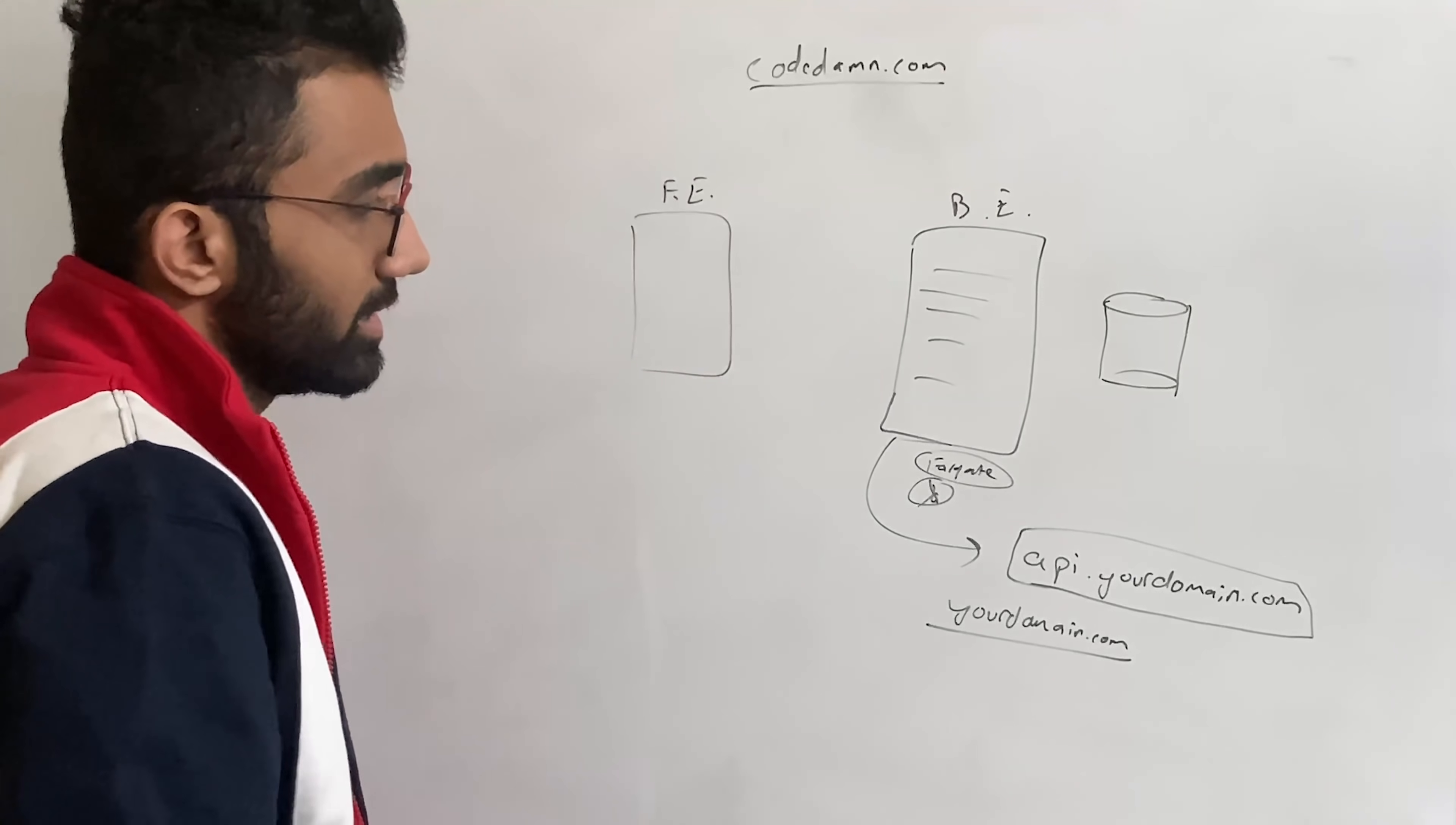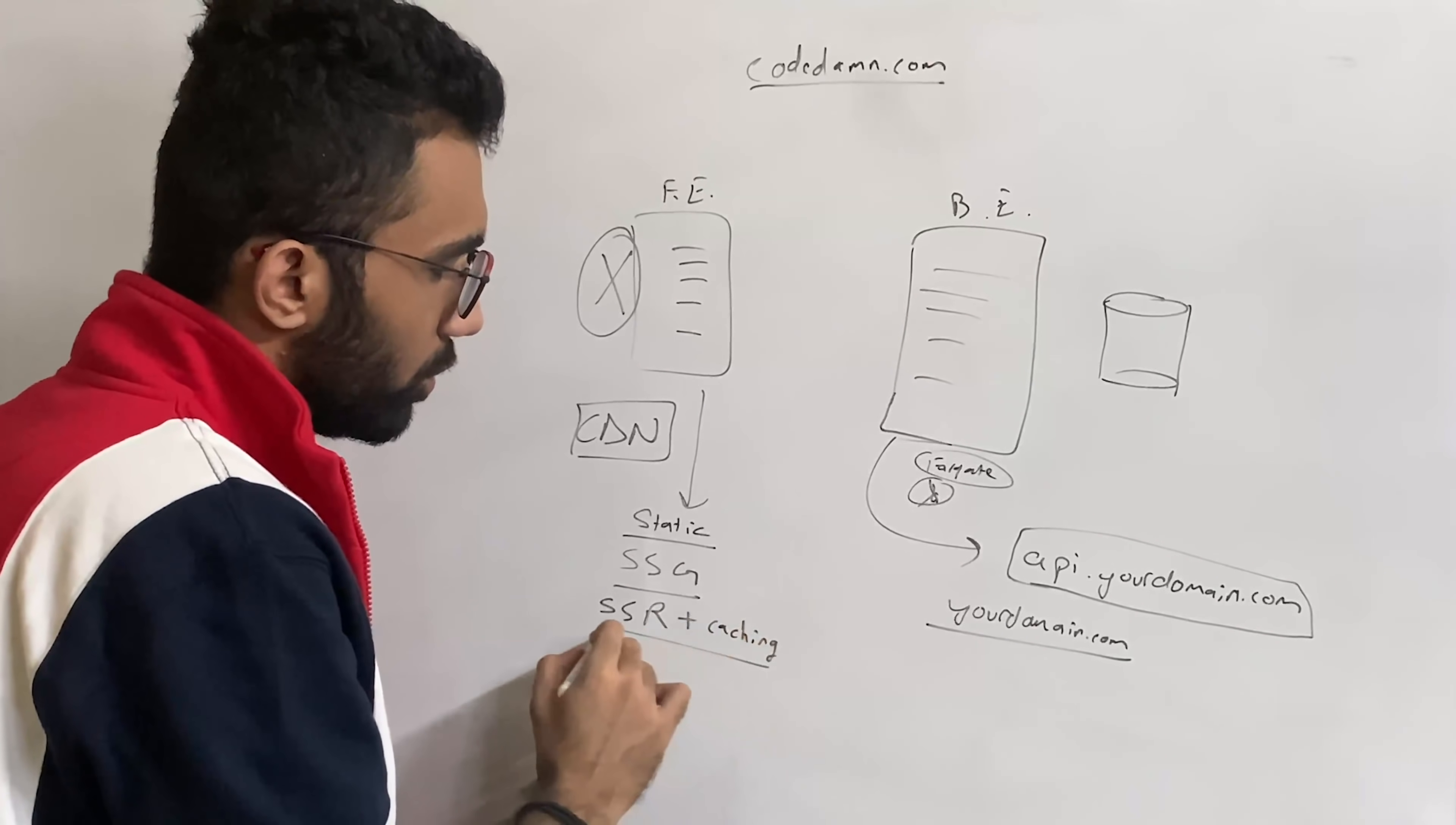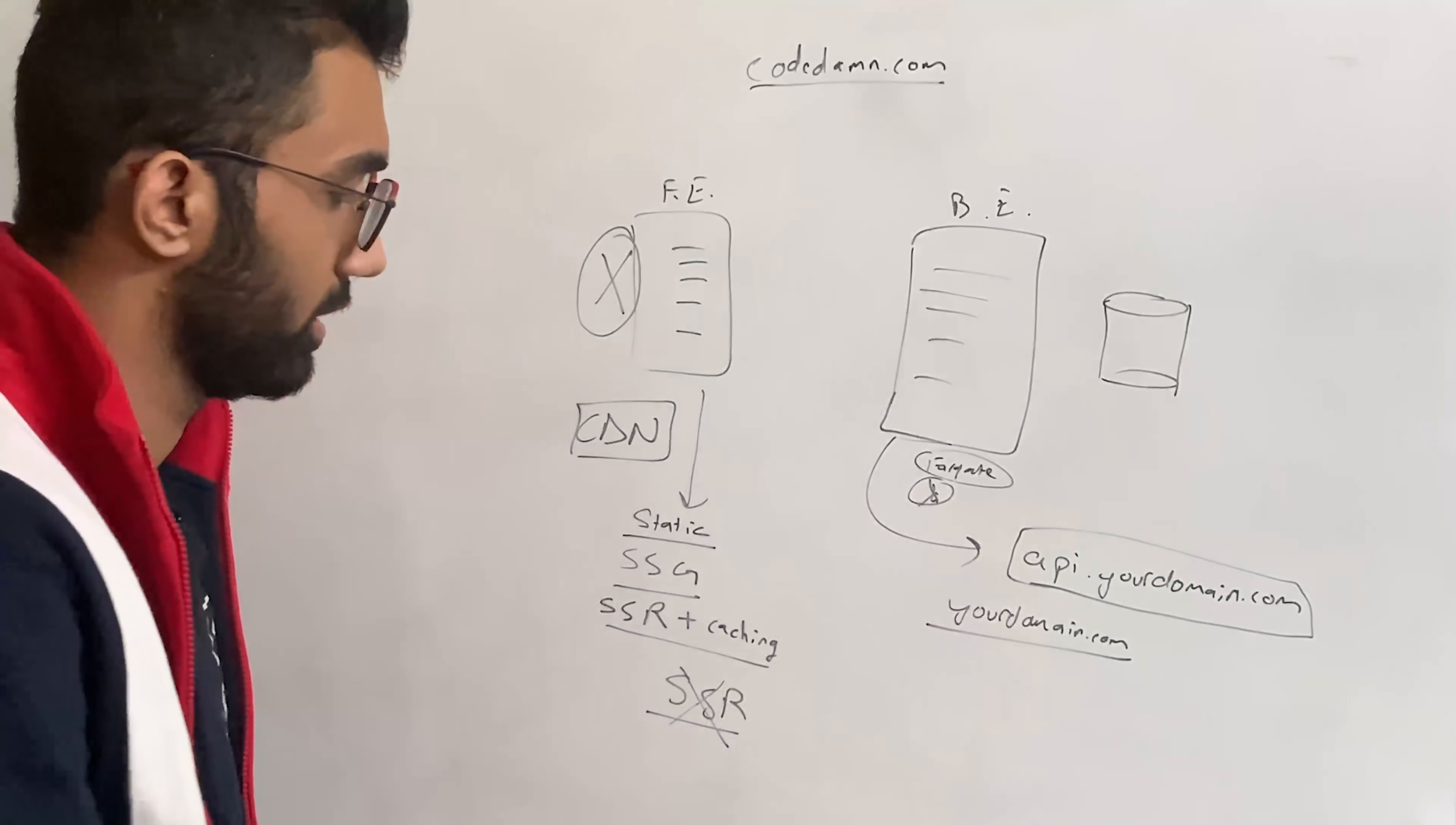Now the biggest reason for doing this is that now your front end does not need to be a server - it only needs to be a CDN. Why? Because your front end in most of the cases should be delivering static pages anyway. Either those are static pages or those are server side generated pages or those are server side render pages with some sort of caching in place. You don't necessarily want fully server side rendered pages on every single refresh - this is usually computationally expensive and you have to do it only if your workflow really demands it for some reason.